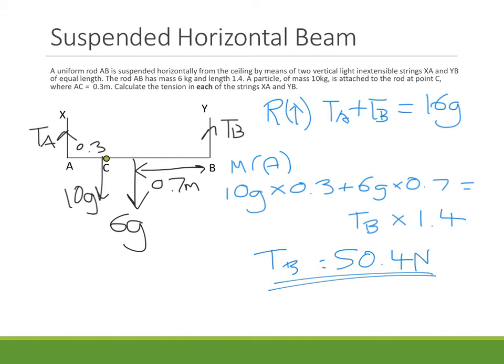All we've got to do after that, as we did last week, is just substitute this value of TB back up into our resolved equation there. So with that in mind, TA is going to be the 16G minus what we found for TB, and that comes out to be 106.4 newtons. And that's it for that question.